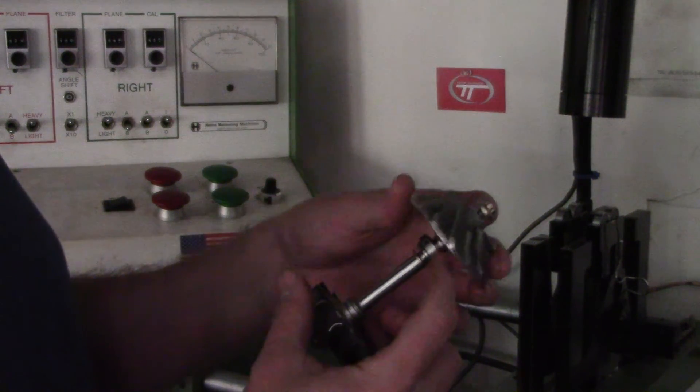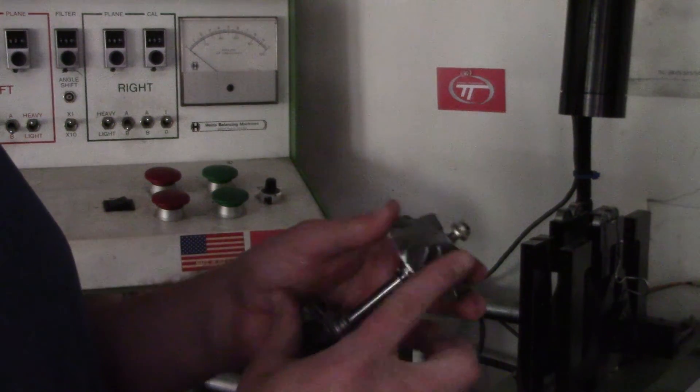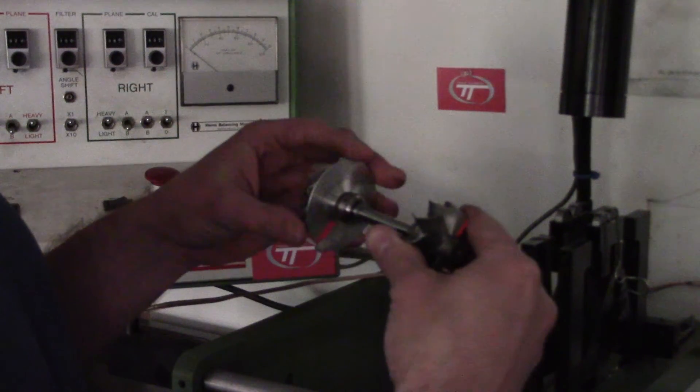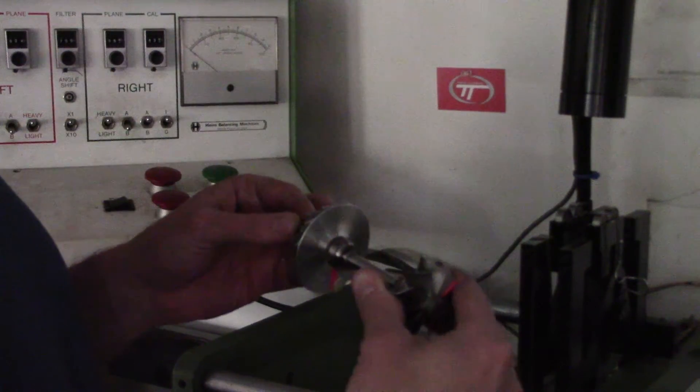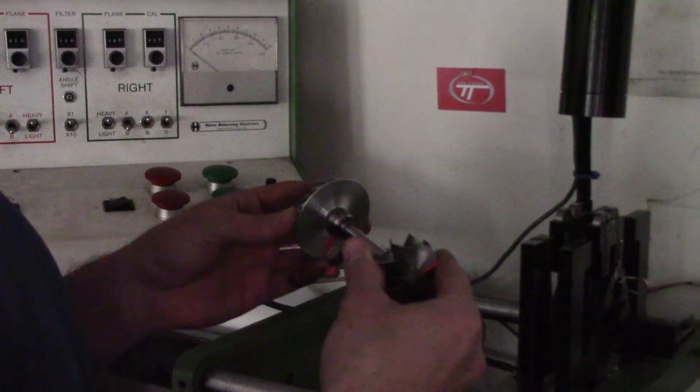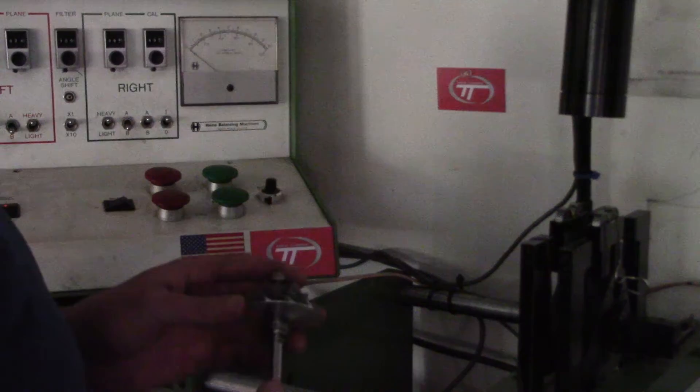It could be an imperfection of the bore, the lock nut. When you tighten it down, it could bend it a half of a thousandth, and that will throw it ten times out of weight balance. So all these little things you have to compensate to make sure that you build it properly.